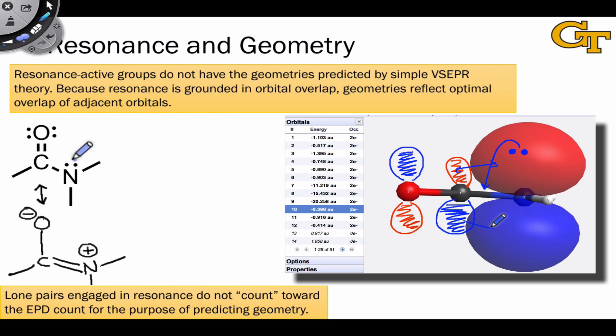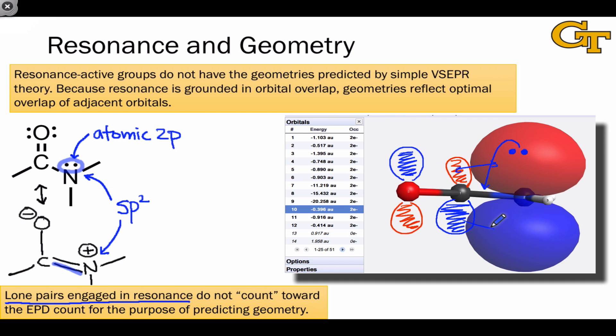The punchline is that because this lone pair is really engaged in a bond of sorts with the carbon next door, the nitrogen adopts sp2 hybridization. This hybridization allows this pair of electrons to occupy an unhybridized atomic 2p orbital. The useful practical piece of information to conclude from this is that lone pairs engaged in resonance do not count toward the EPD count for the purpose of predicting geometry. This is because they occupy unhybridized atomic 2p orbitals.